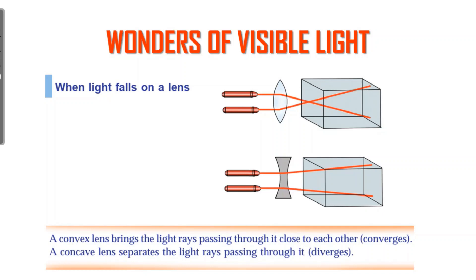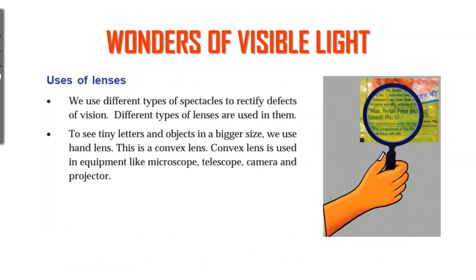Now, uses of the lens. We use different types of spectacles to rectify deficient vision — to correct these vision problems. To see tiny letters and objects at bigger sizes, we use a magnifying glass. A hand lens is used to magnify the smallest objects and uses a convex lens. We also use lenses in microscopes, telescopes, cameras, and projectors.